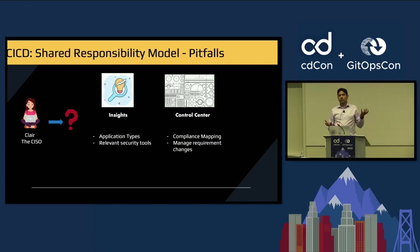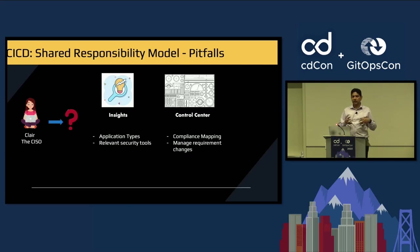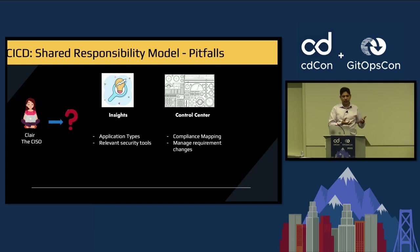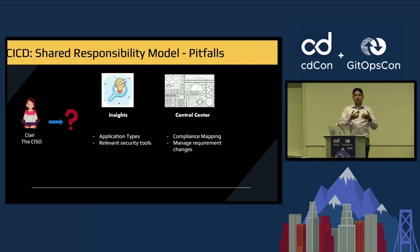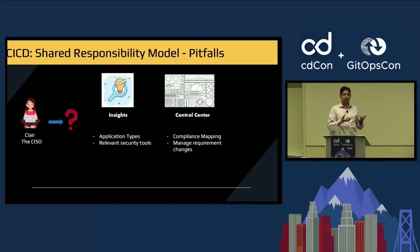From the CISO point of view, I need insights into what type of applications my organization is running — whether microservices, non-microservices, Go-based, or Python-based. I also need to know what kind of security controls all the applications in my organization require. On the control side, how do I make sure everything is running in compliance, and how do I make sure that with all the requirement changes or new projects coming in, I take care of those requirement changes? As requirements change, I need to deploy those tools and make sure everything stays in compliance.